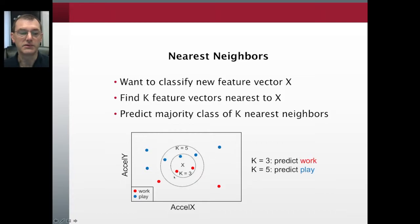However, if we chose k equal to 5, it encompasses two additional examples, both of which are play. So if we use k equals 5, now play is in the majority, and we would predict play. That's essentially how nearest neighbors work. You memorize the data you have, and when you receive a new example to classify, you find the nearest neighbors and predict their majority class.